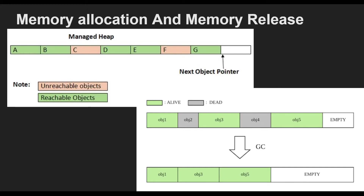Coming to memory allocation and memory release: when a new process is initialized, the runtime reserves a contiguous region of address space for the process. This reserved address space is called the managed heap. The managed heap maintains a pointer to the address where the next object in the heap will be allocated. Initially, the pointer is set to the managed heap's base address. All reference types are allocated on the managed heap. When an application creates the first reference type, memory is allocated for the type at the base address of the managed heap.